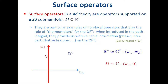Surface operators in a four-dimensional theory are non-local operators supported on a two-dimensional sub-manifold of space-time. For simplicity, I take the space-time to be R4 and the two-dimensional sub-manifold where the defect is localized as a two-dimensional plane. These surface operators can be used as probes to detect some of the non-trivial properties of the theories — they are sort of thermometers for the quantum field theory.